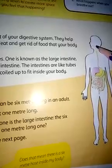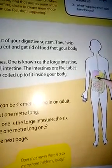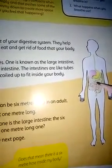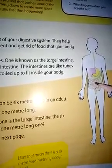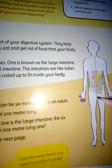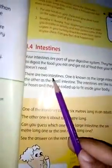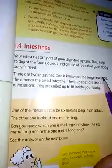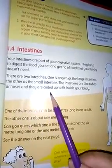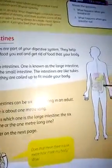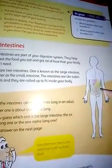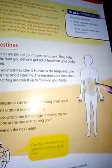When we take in food, gastric juice churns it, and what our body needs comes into the small intestine, where it is absorbed. Whatever the body doesn't need is passed to the large intestine, from where it is released from our body through the anus. The intestines are like tubes or hoses and they are coiled up to fit inside your body. This is your small intestine and this is your large intestine — coiled up to fit inside our body.